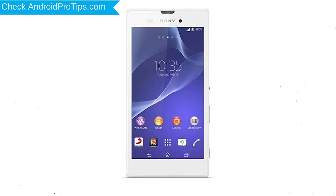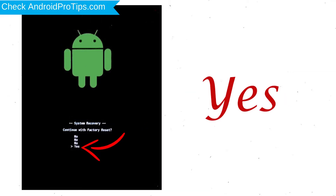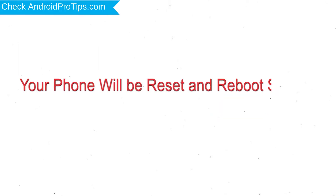Next, press and hold the volume down button and power button. When you see the Recovery Mode screen, release all the buttons. Select Factory Reset using volume buttons and confirm with the power button. Finally, choose the Yes option. Your phone will be reset and reboot shortly.